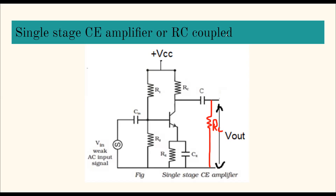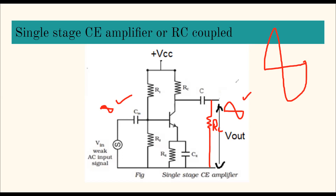An amplifier takes a small signal given to the base and increases its amplitude and power. So the output signal is larger than the input. But what if the amplification from one stage is not enough — what if my required signal strength is still not attained after one stage of amplification?